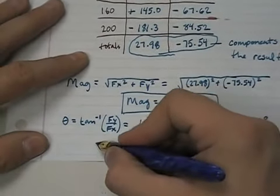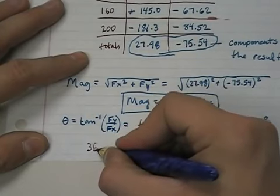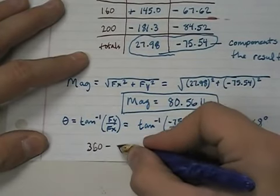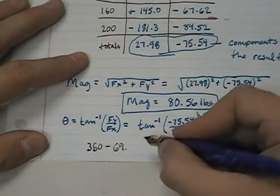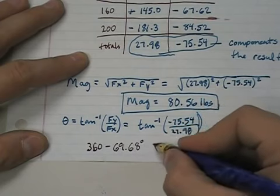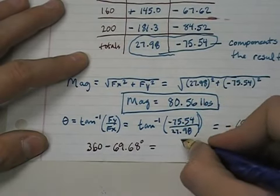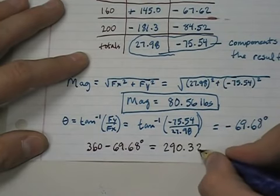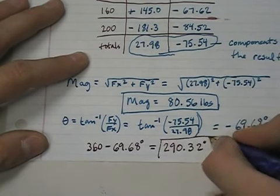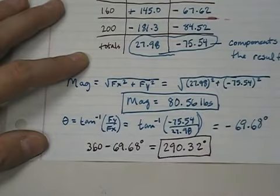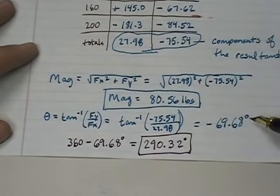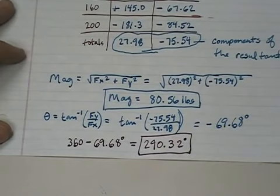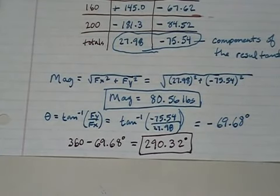Well, you take this angle and you say 360 minus 69.68 degrees and you come up with 290.32 degrees. And all we're really doing is finding an angle that is coterminal with this one so that it's in standard form. 290.32 degrees.